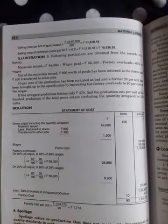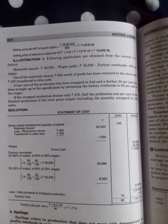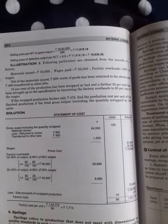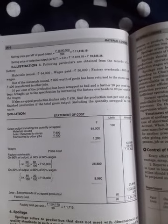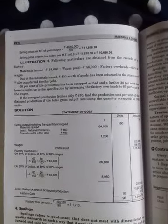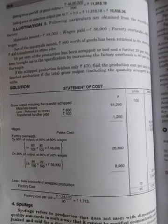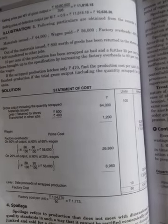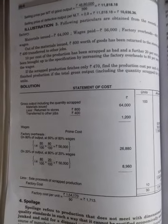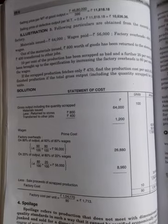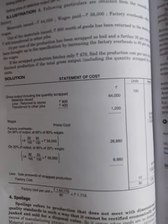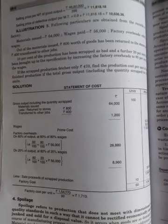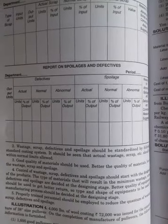Next is spoilage. Spoilage means production quality standards not met. The main difference between defective and spoilage is that spoilage cannot be reworked. Next, illustration number 4.